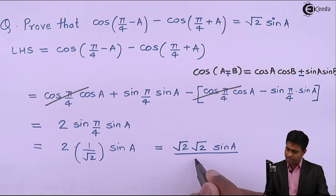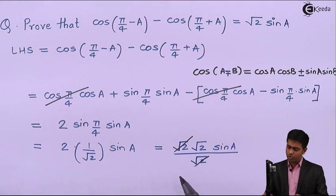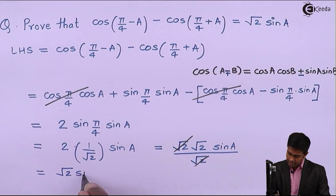In the denominator we have only one term, that is √2. So here now √2 and √2 will be cancelled and we will get √2 sin A.